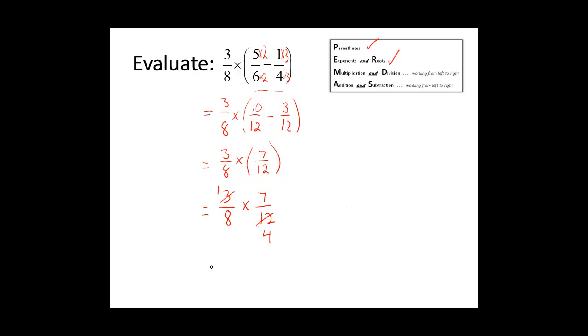There are no other common factors we can divide out in the numerator and denominators, so we will multiply our numerators together. 1 times 7 is 7, and 8 times 4 is 32.